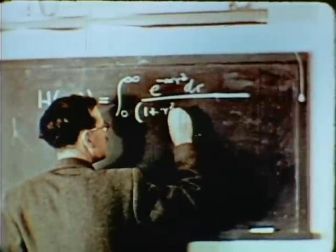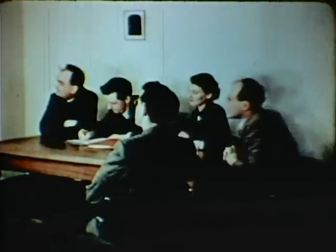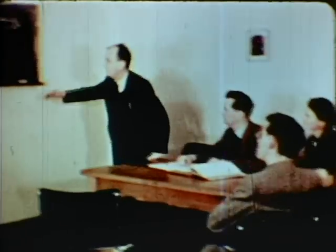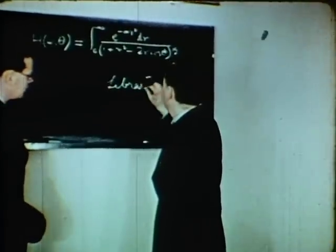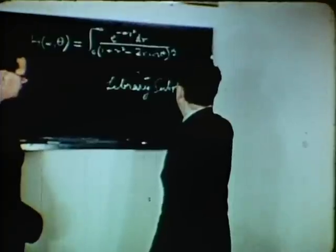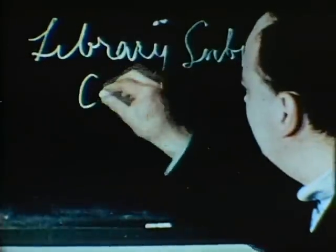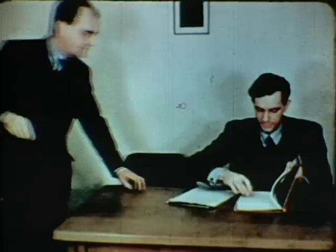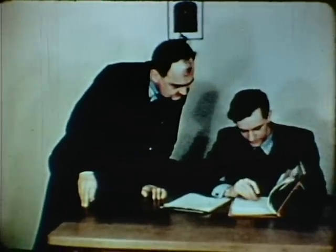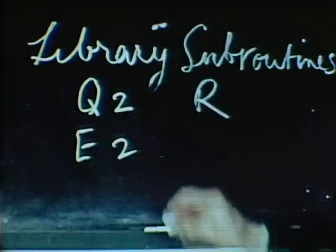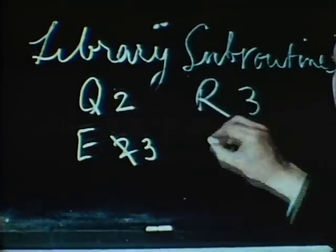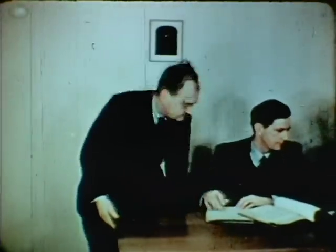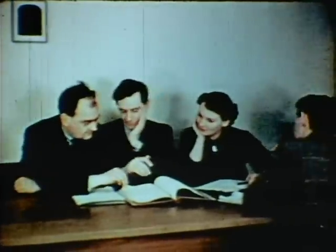The mathematician explains his problem to a committee of experts. The first thing to do is to make a list of the library subroutines that will be needed: a subroutine for quadrature, one for the exponential function. A member of the committee interrupts to point out that there is a more suitable exponential routine available. A read routine and a print routine. The committee proceeds to discuss the programming of the problem.